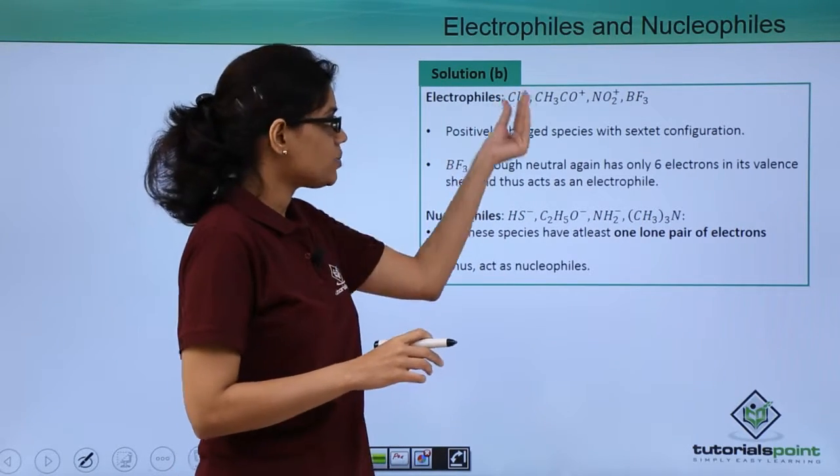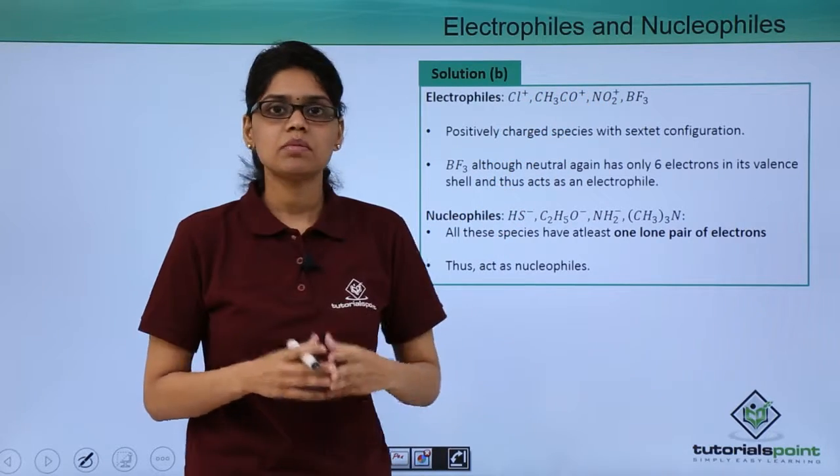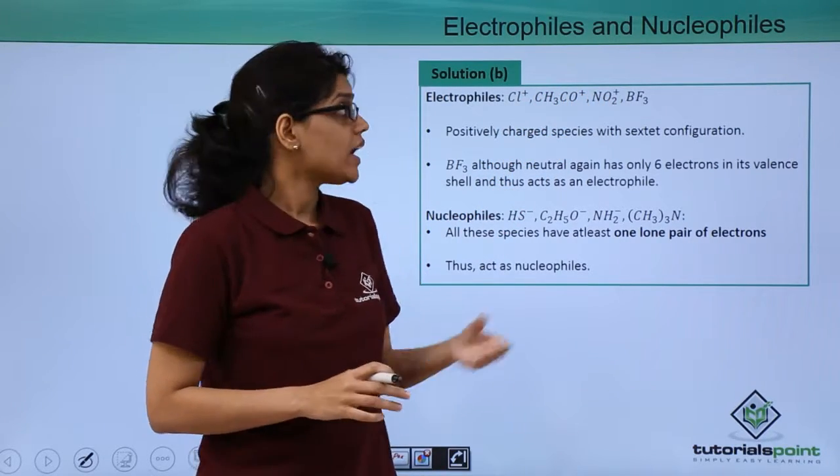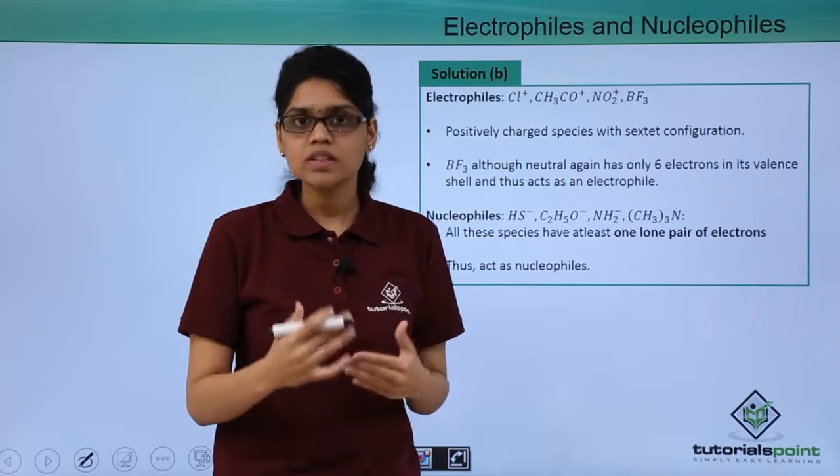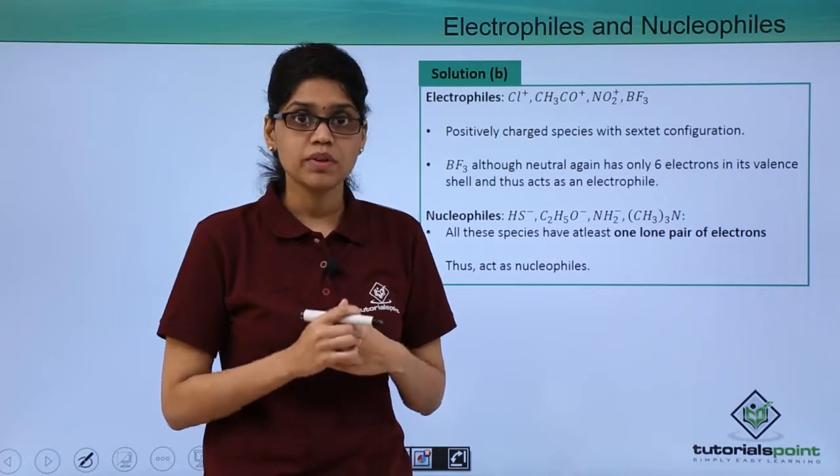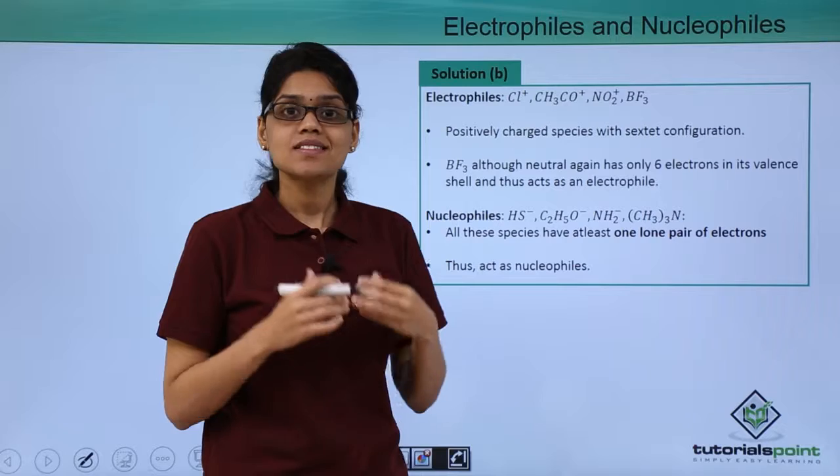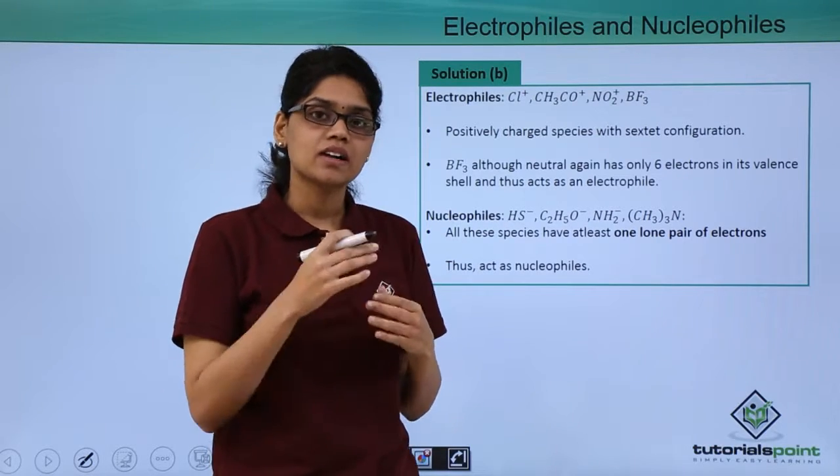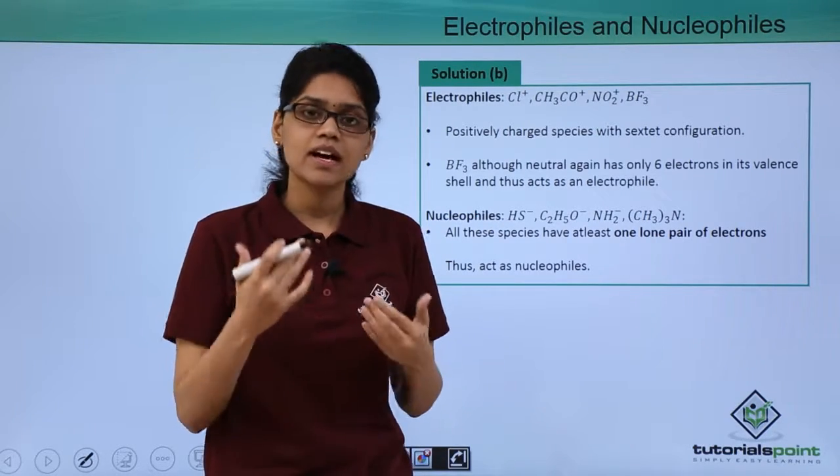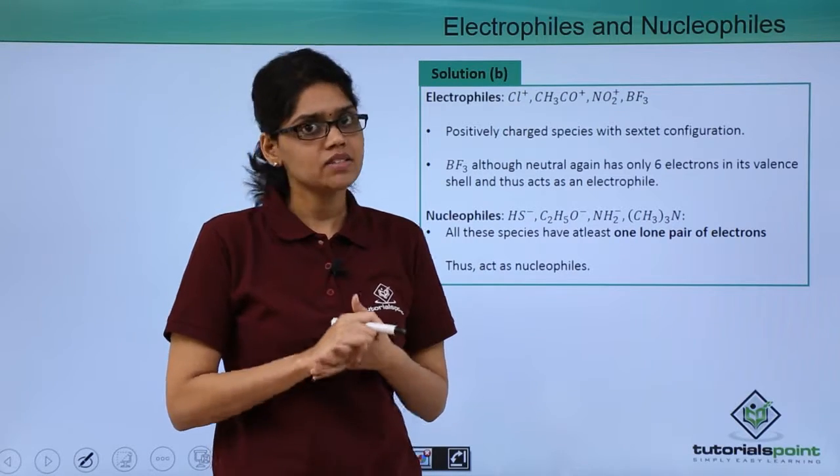You can see that Cl+, CH3CO+, and NO2+ can be classified as electrophiles. Here BF3 is also an electrophile although a neutral molecule, because boron has only 6 electrons in its valence shell and therefore it is electron deficient and seeks an electron pair to satisfy its octet.